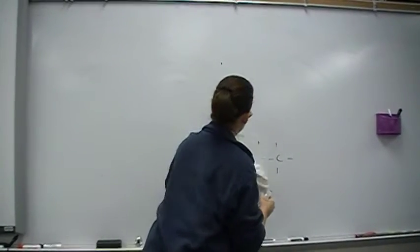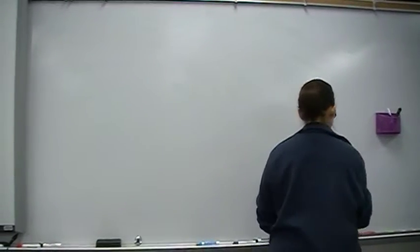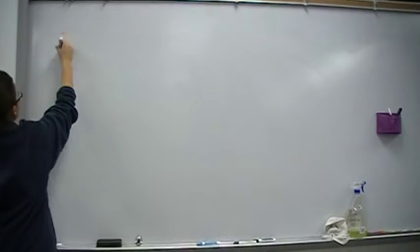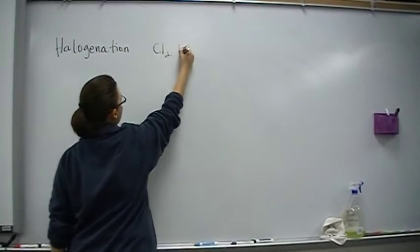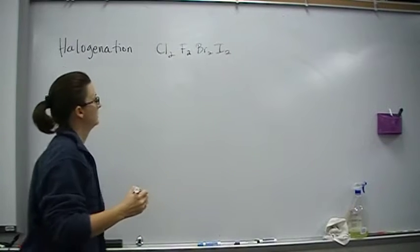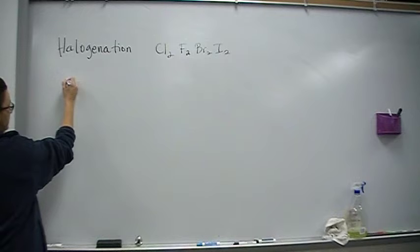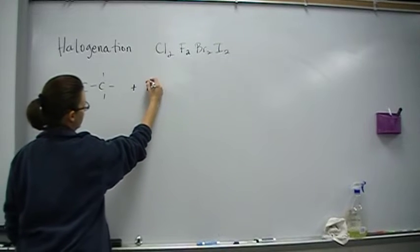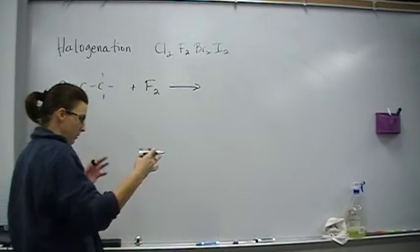The second reaction is halogenation. And that's where we add a halogen. Do you remember what the halogens are? No class, no answer. Halogenation. That's addition of chlorine, fluorine - that's F, not FL - bromine or iodine. All those guys are diatomics. All those guys are halogens.